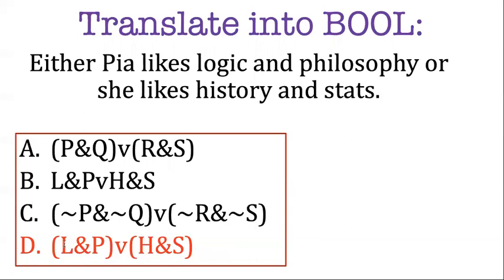What this says is Pia likes logic and philosophy or she likes history and stats. Now some of these other translations have various problems. The English sentence doesn't have a bunch of negations in here, and so we don't want to translate it into Bool with a lot of negations. There's a problem with translation B as well, even though B and D are very similar. There's grouping in D, which is lacking in B, and that grouping is actually essential.